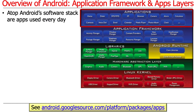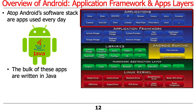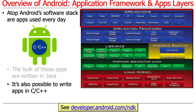Apple does the same thing, and everybody does the same kind of thing with their client-side code or code that's exposed to users. Most of these apps are written in Java, but you can also write them in C and C++ using the Native Development Kit, or NDK. Mostly that would be done by things like games — so if you use your mobile device as a gaming console, some of those apps might be written with the NDK, but by and large they're written in Java.